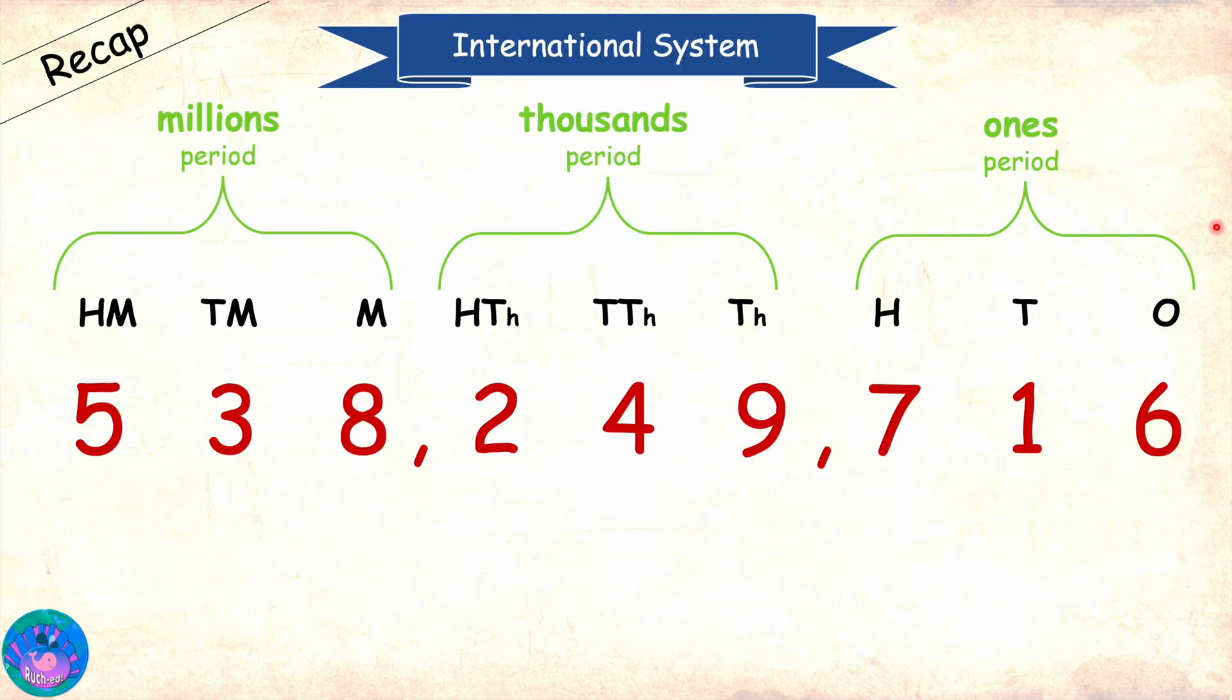In this system, each period is of three number places. The ones period is made up of ones, tens and hundreds. Then we have the thousands period made up of thousands, ten thousands and hundred thousands places. And then we have the millions period made up of millions, ten millions and hundred millions places.